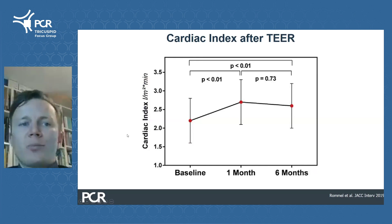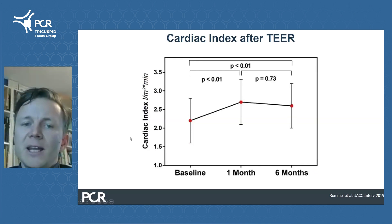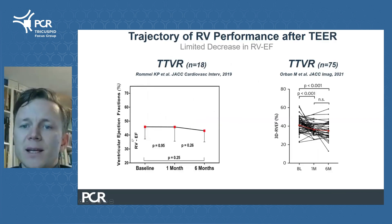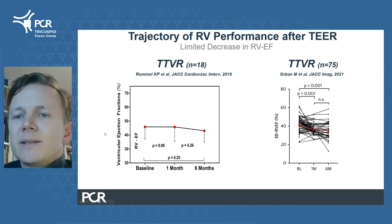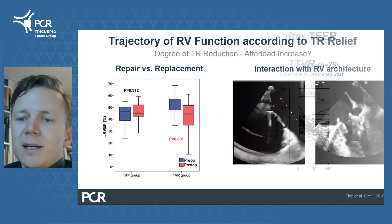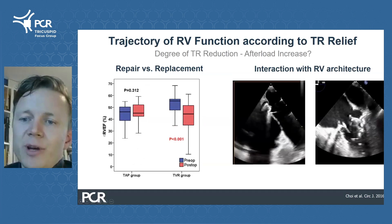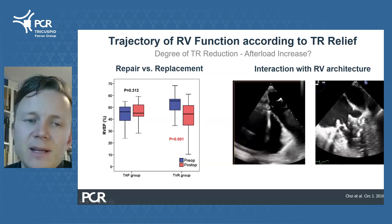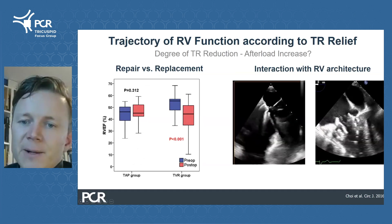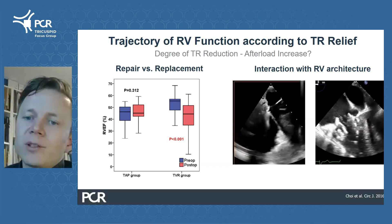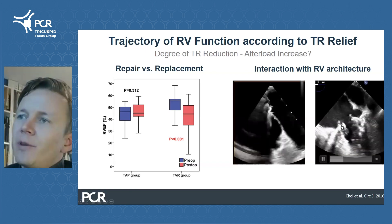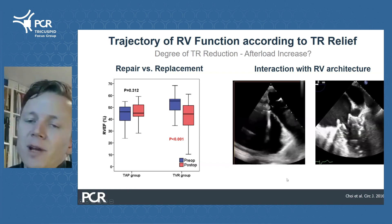Overall, cardiac output surges after interventional tricuspid repair, and this despite a tendency for a reduction in volumetric RV function. This trend is even more pronounced after replacement as compared to repair, which might be related to a more complete TR resolution but also to an interaction of the prosthesis with the base of the right ventricle.